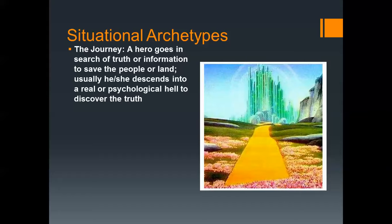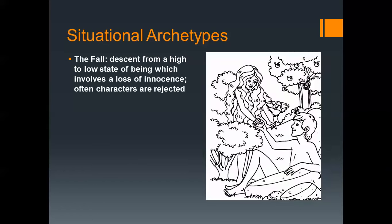She goes through many parts of this journey in order to figure out the truth and save her people. Then we have the fall, which is a very common situational archetype — a descent from a higher to a lower state of being, usually as a punishment for transgression. It involves the loss of innocence. This is a picture of Adam and Eve — the classic example of the fall, when they lost their innocence and went from a higher state to a lower state. A sin entered the world, and we see that pattern in a lot of literature.